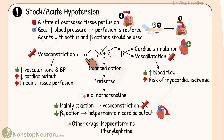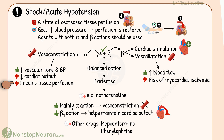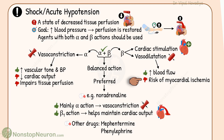If the drug has only alpha action, it will cause vasoconstriction. The increased vascular tone and blood pressure are beneficial, but there can be a decrease in cardiac output and impairment of tissue perfusion. On the other hand, selective beta agonists cause cardiac stimulation and vasodilatation. This increases blood flow, but at the same time there would be risk of myocardial ischemia. Thus, there are disadvantages to using selective drugs. A drug that acts on both types of receptors produces balanced action, so they are preferred.